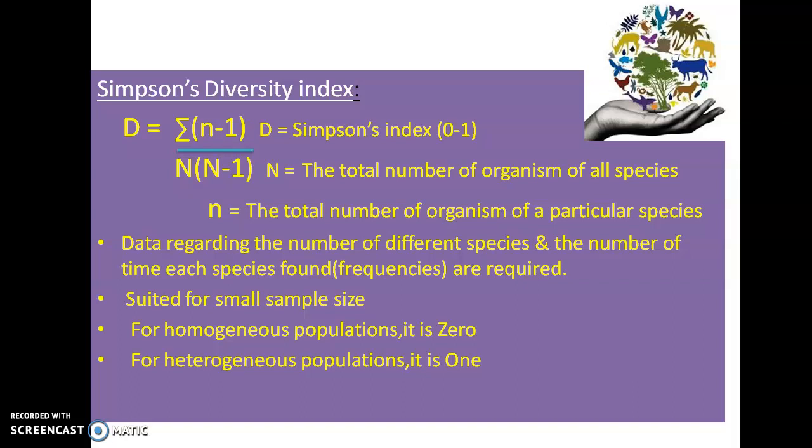This will provide data regarding the number of different species and the number of times each species is frequently observed. The Simpson diversity index provides an indication of how many organisms are existing in that particular area and how frequently a particular organism is observed. This index is generally suited for small sample size — it will be 0 when the population is homogeneous and 1 when the population is heterogeneous, consisting of different species.